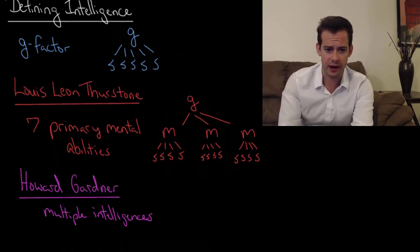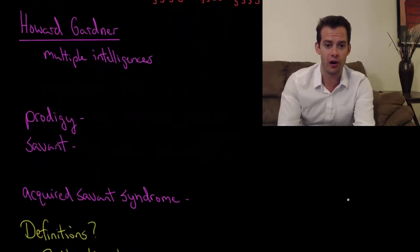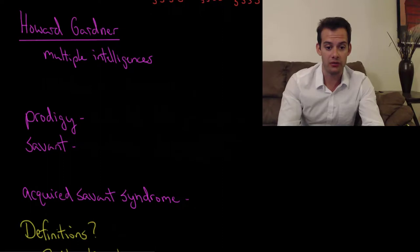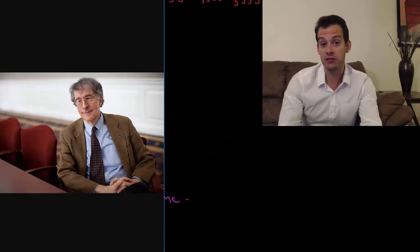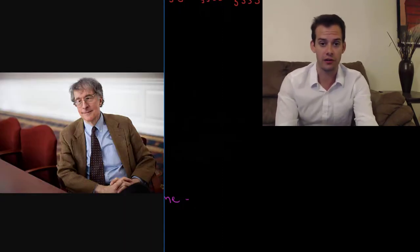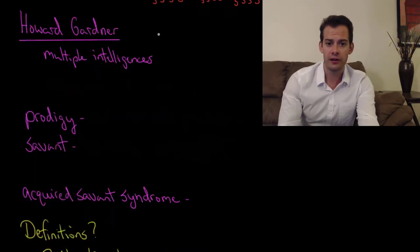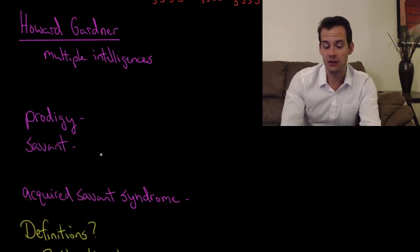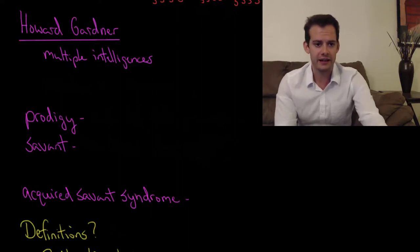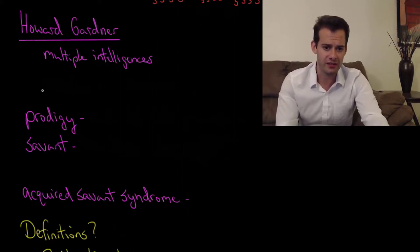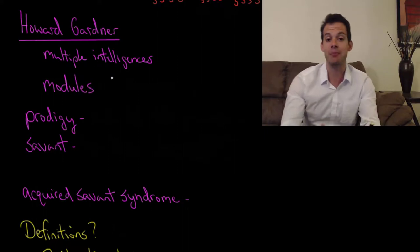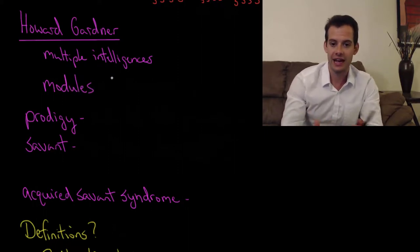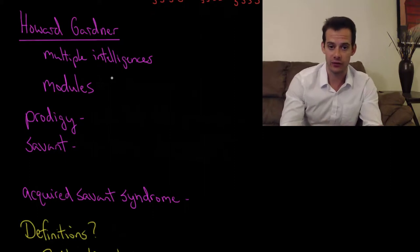Another similar theory comes from a more recent researcher, Howard Gardner. Gardner has proposed what he calls a theory of multiple intelligences. The idea of this multiple intelligence theory is that intelligence works in modules. We have separated domains of intelligence and they don't necessarily influence one another.